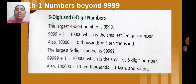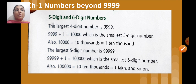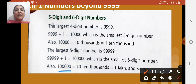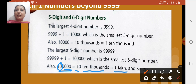The largest five-digit number is 99,999, or simply five nines. When we add 1 to 99,999 we get 1 lakh, which is the smallest six-digit number. 1 lakh can be read as 10 ten-thousands — if you separate the 10 from here, you get 10,000, so 10 ten-thousands equals 1 lakh.